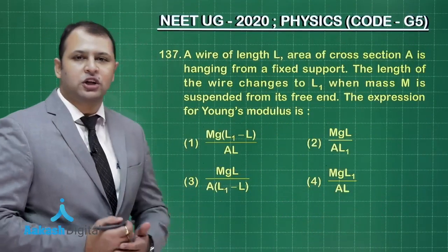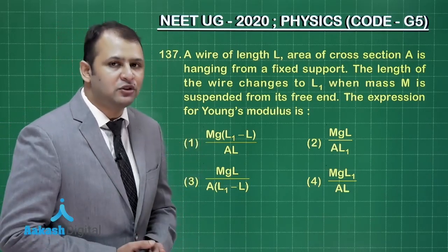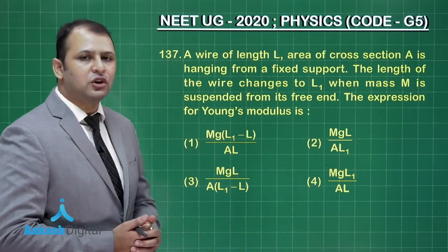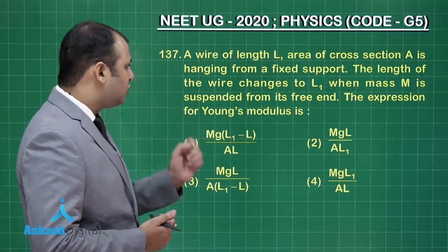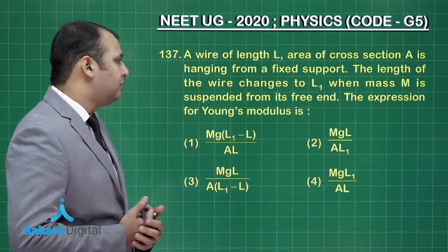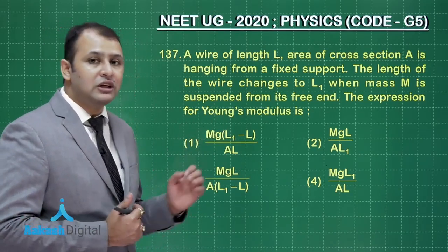Now let us take question number 137. This question belongs to chapter Mechanical Properties of Solid and it is an easy question. The question states, a wire of length L area of cross section A is hanging from the fixed support. The length of the wire changes to L1 when mass M is suspended from the free end. The expression for the Young's modulus is, so let us start with the solution.